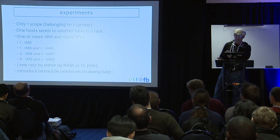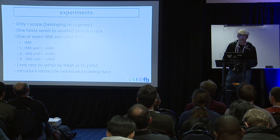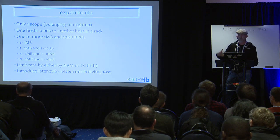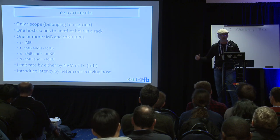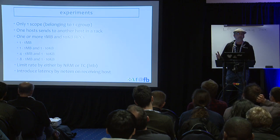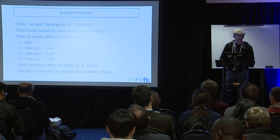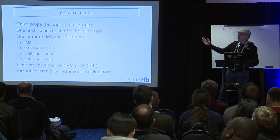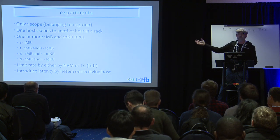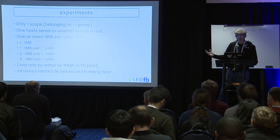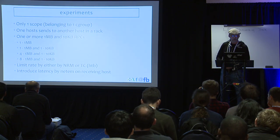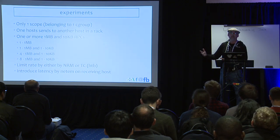Now for some experiments — currently done with only one scope, so multiple scopes and multiple RTTs remain as future work. In this experiment, one host sends to another host in the same rack. We impose a limit of typically one gigabit per second or five gigabits per second, and send one, two, five, or nine flows. For two, five, and nine flows, one is a 10 kilobyte RPC and the other is a one megabyte RPC. I limit the rate either by this BPF NRM or TC using HTB, and in some cases I add latency through NetEM — like 10 milliseconds.